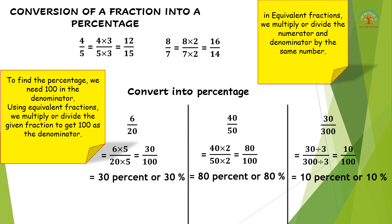For example: 6/20 — since 20 × 5 = 100, we multiply both numerator and denominator by 5, giving 30/100 = 30%. For 40/50, since 50 × 2 = 100, we get 80/100 = 80%. For 30/300, the denominator is more than 100, so we divide: 30 ÷ 3 = 10 and 300 ÷ 3 = 100, giving 10/100 = 10%.